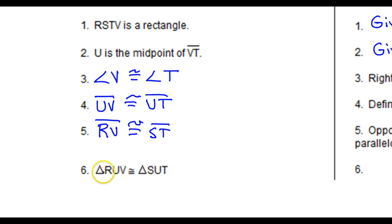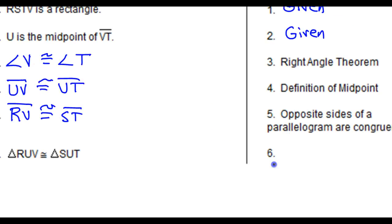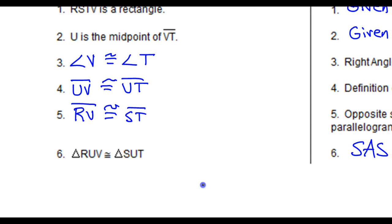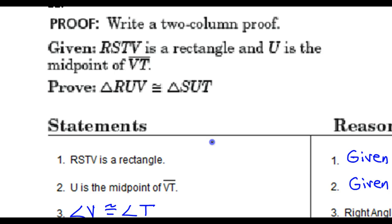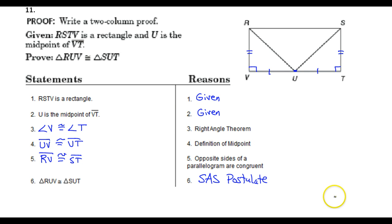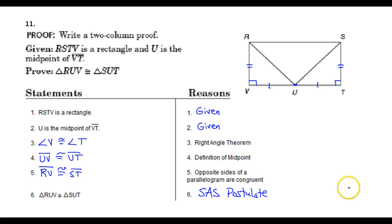Now, do we have enough information to show that triangle RUV is congruent to triangle SUT? Why would these triangles be congruent? Side, angle, side. Side, angle, side. And that was it. That's what we were supposed to prove. So that's it for number 11. And that's going to be the end of this video, because that was, in fact, the last problem. So I hope this video was helpful, you guys. I will see you on the next video.